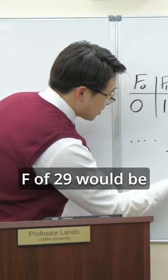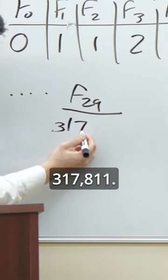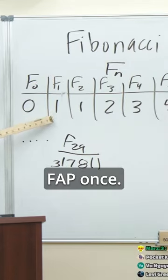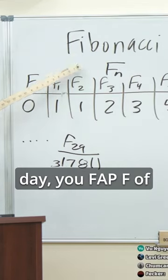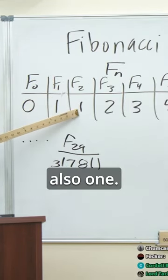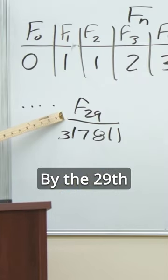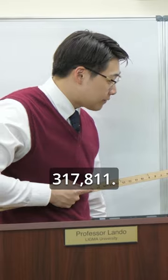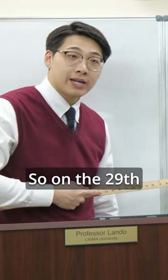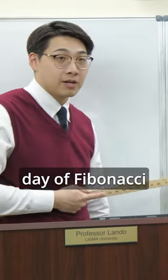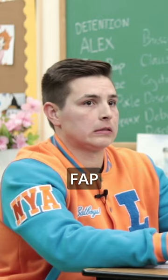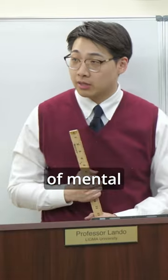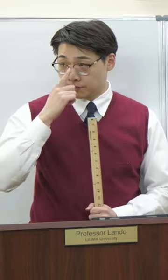F of 29 would be 317,811. So on the first day you fap once, on the second day you fap f of two, which is also one. By the 29th Fibonacci sequence number it would be 317,811 — so on the 29th day of Fibonacci Fap February you would have to fap 317,811 times. A test of strength and mental fortitude.